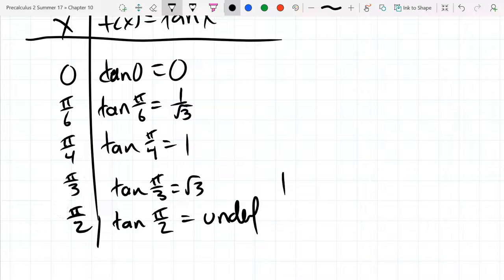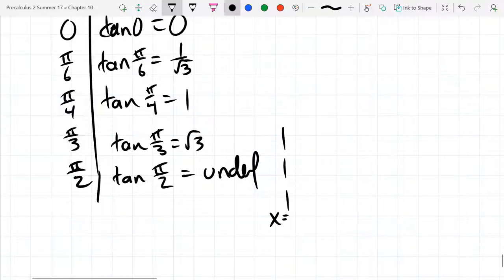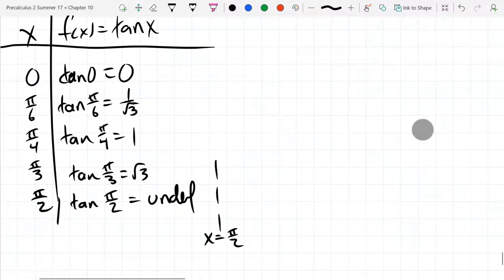And of course, just like before, that means vertical asymptote right there. We can see our x-coordinate of our vertical asymptote will be pi over two. All right, that's enough to get started on our graph.